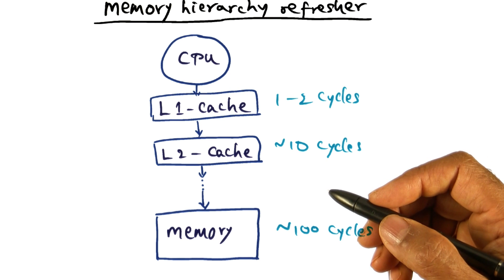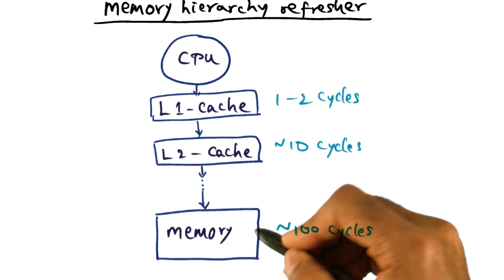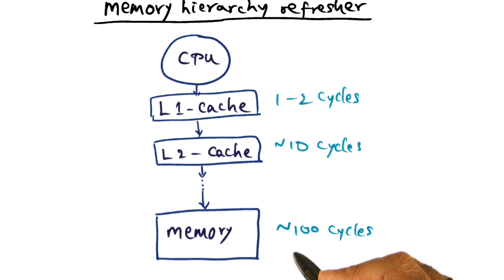The disparity in the CPU cycle time versus the main memory—if you take the disparity between the CPU and the main memory—it's more than two orders of magnitude today, and it's only growing.